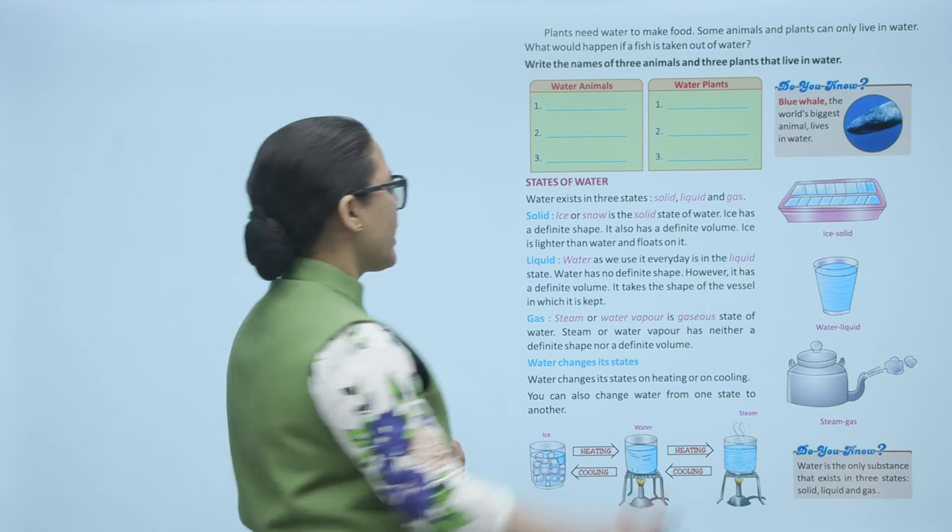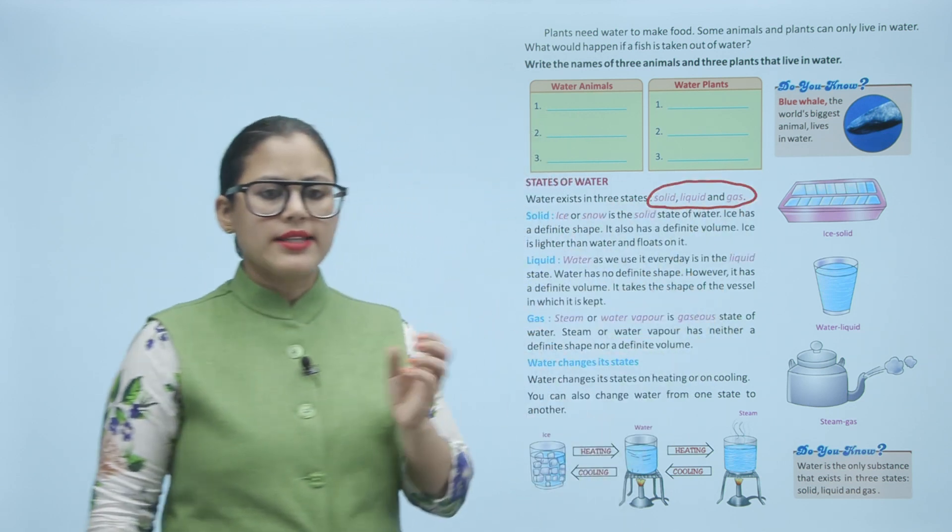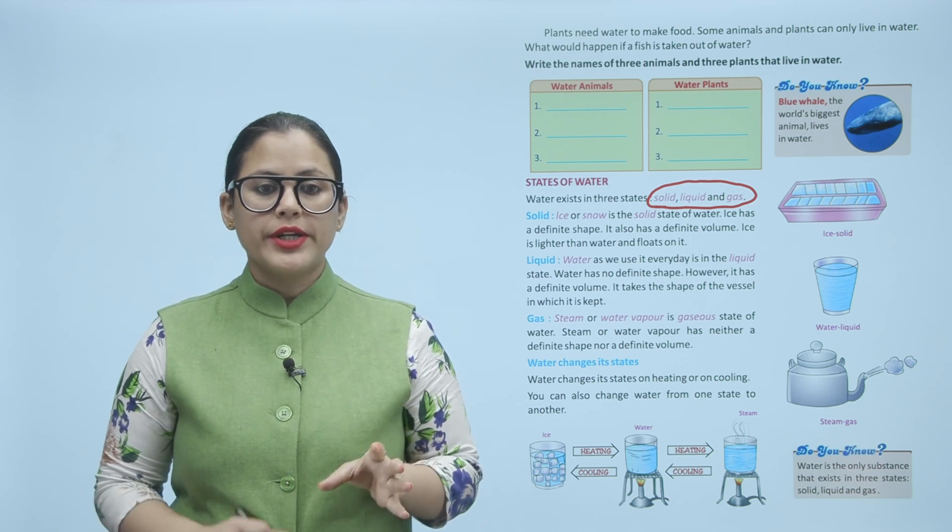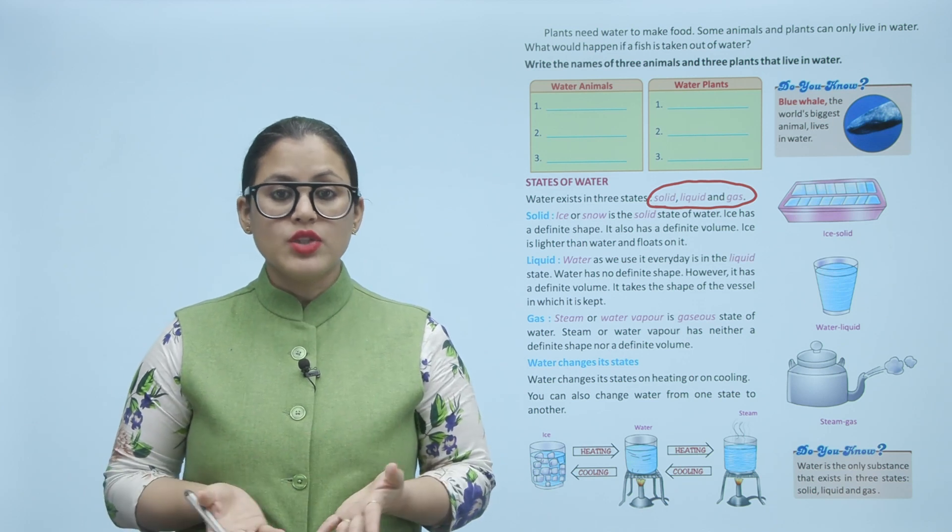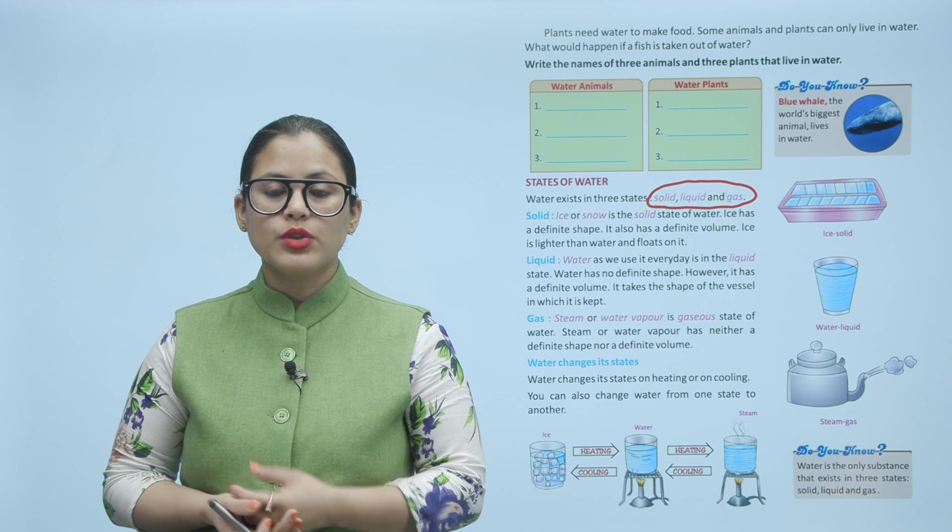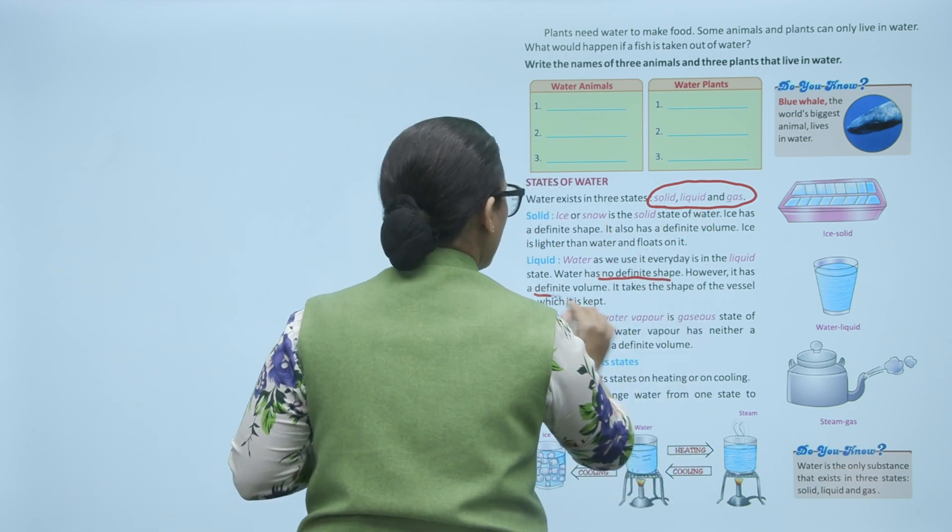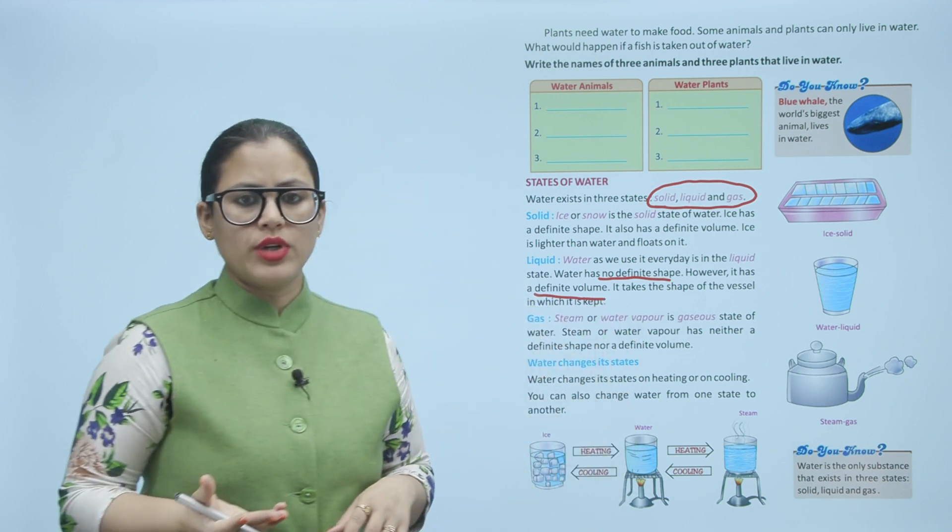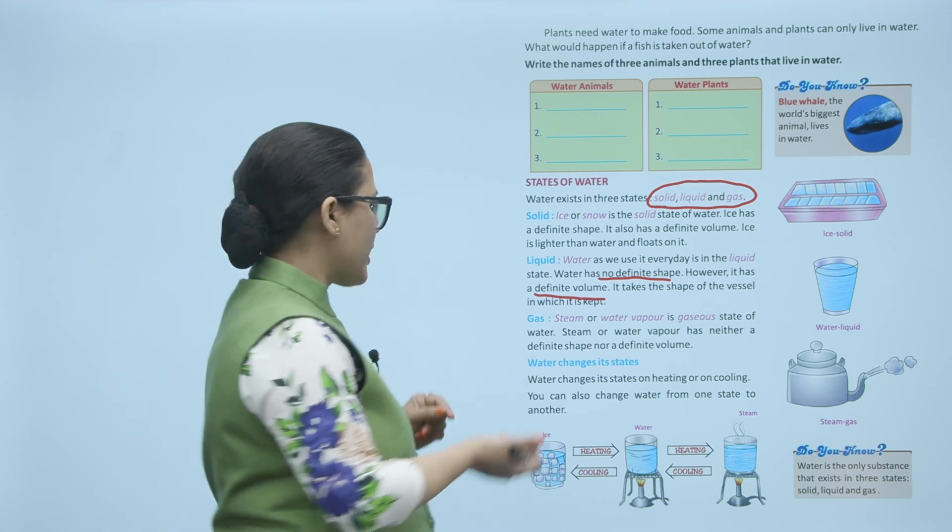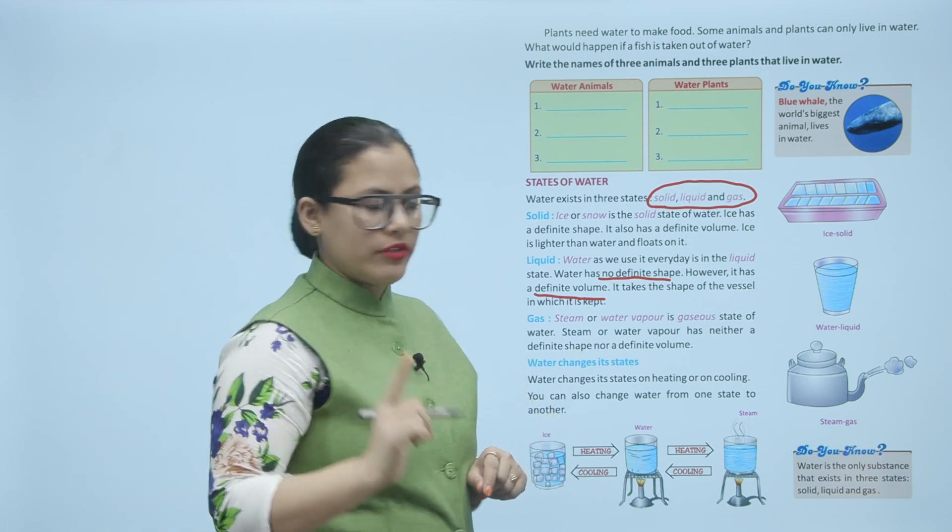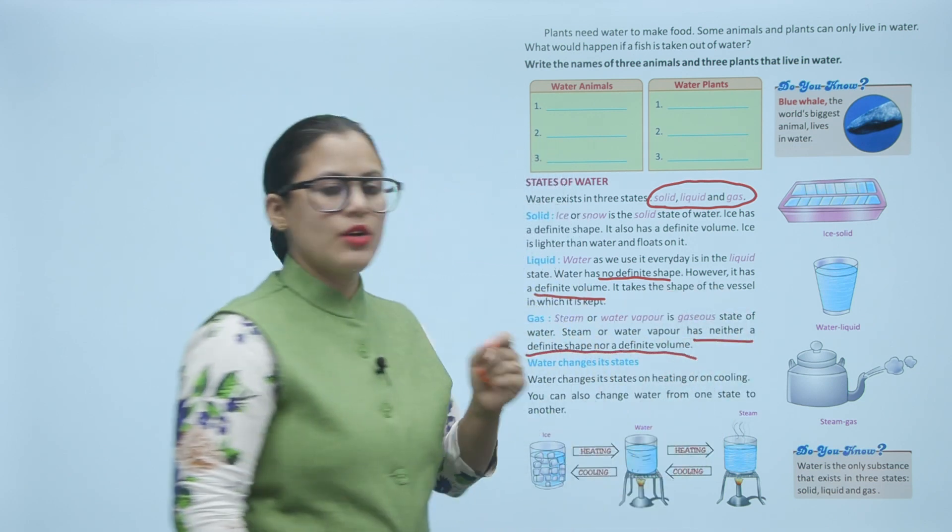Water is found in three states. Water is the only substance that is found in all three states. Ice or snow is a solid form. Solid has a definite shape and definite volume. Liquid: Water that we consume daily, use everyday, is liquid form. Water, because it is liquid, has no definite shape, but it has definite volume. Whatever vessel you put water in, it takes that shape. Gas: In gas you have steam or water vapor. This is the gaseous state. Steam or water vapor has neither definite shape nor definite volume.